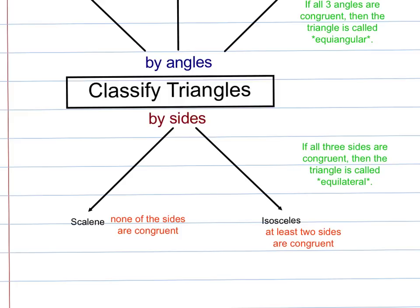It turns out that these two statements are related. If we have an equiangular triangle, then it must be equilateral. Likewise, if we have an equilateral triangle, then it's equiangular. In other words, we can draw a biconditional statement between these two.